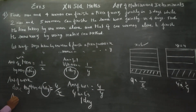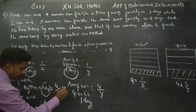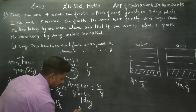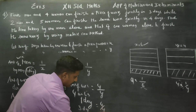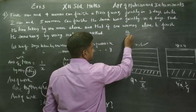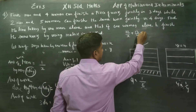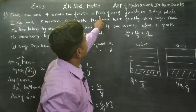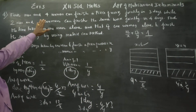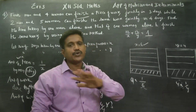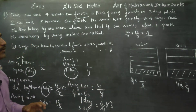The amount of work done by 4 men in 3 days, combined with the work done by 4 women in 3 days, equals one complete piece of work. So 4 men and 4 women working jointly for 3 days complete the full job.